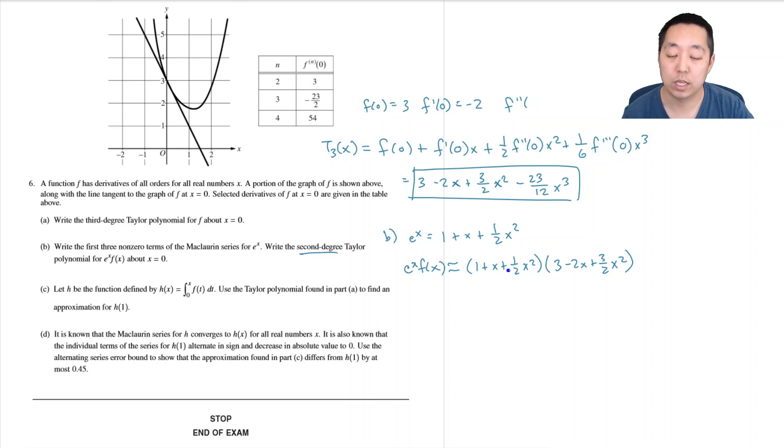This is equal to: the constant term is 1 times 3 which is 3. The x term is x times 3 and then 1 times negative 2, so minus 2. The x squared terms: I have one half times 3 that's three halves, I have x times minus 2x that's minus 2x squared, and then 1 times three halves that's plus three halves. So this is 3 plus x, and three halves plus three halves is 3 minus 2 is 1, plus x squared.